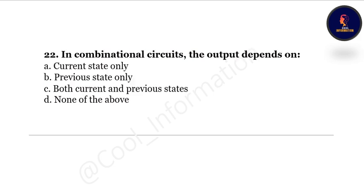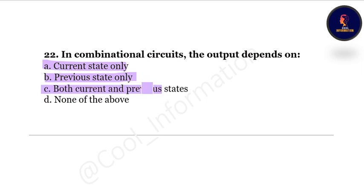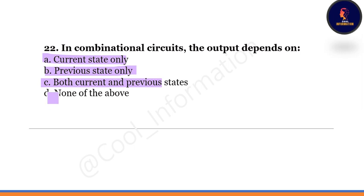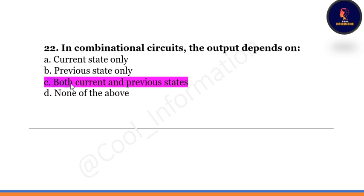Question 22: In combinational circuits, the output depends on what? Option A: current state only, Option B: previous state only, Option C: both current state and previous state, Option D: none of the above. The correct option is C — both current and previous states.